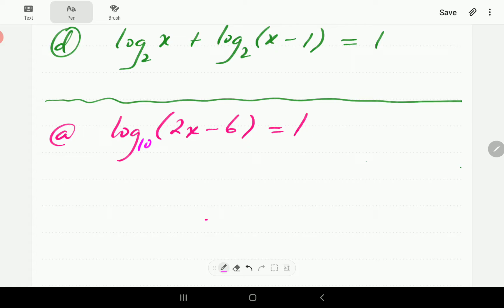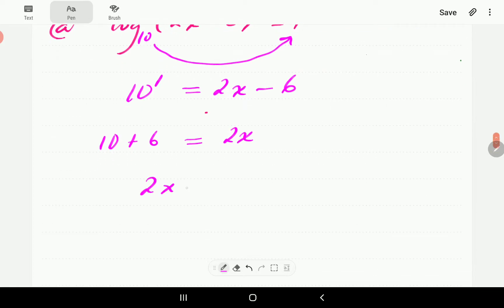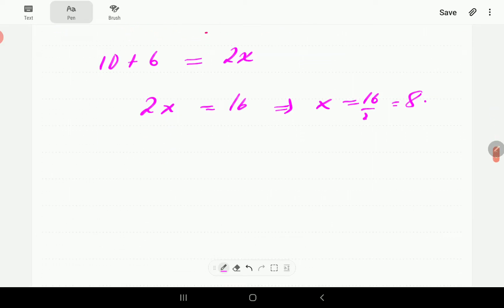So if we write this in exponential form, it means 10 to the power of 1 must be equal to this one. So 10 to the power of 1 is going to be 2x minus 6. This is basically saying that 2x is 10 plus 6, so 2x is 16. So x is 16 over 2, so x is going to be 8.